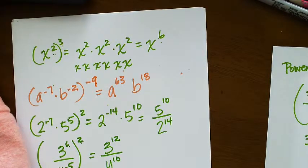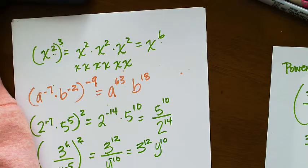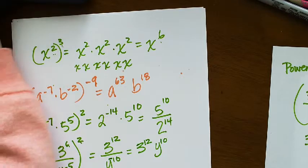Oh wait, I messed up. I put 3, 2. Not this one. 3, y, 3 to the 12th. Oh, I messed up. That's y to the negative 10. Oops. And then, like I was saying before, that negative 10 just comes up top. So it would be 3 to the 12th y to the 10th.